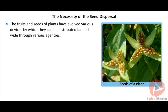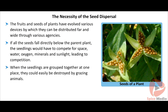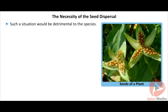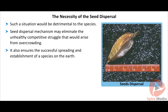The fruits and seeds of plants have evolved various devices by which they can be distributed far and wide through various agencies. If all seeds fall directly below the parent plant, the seedlings would compete for space, water, oxygen, minerals, and sunlight. When grouped together, they could easily be destroyed by grazing animals, which would be detrimental to the species. Seed dispersal mechanisms eliminate the unhealthy competitive struggle arising from overcrowding.